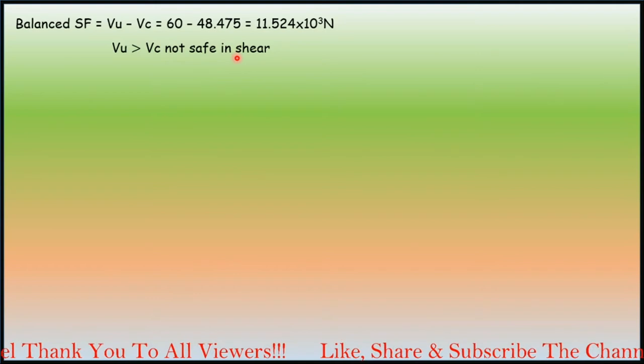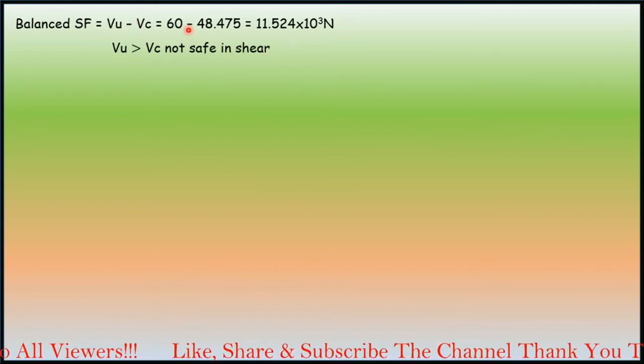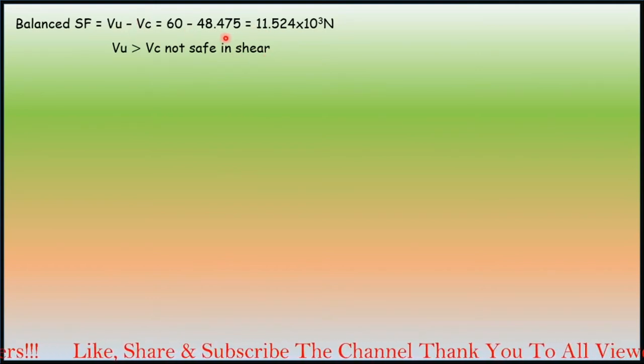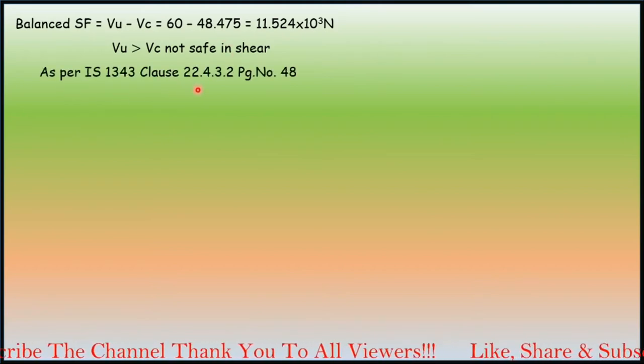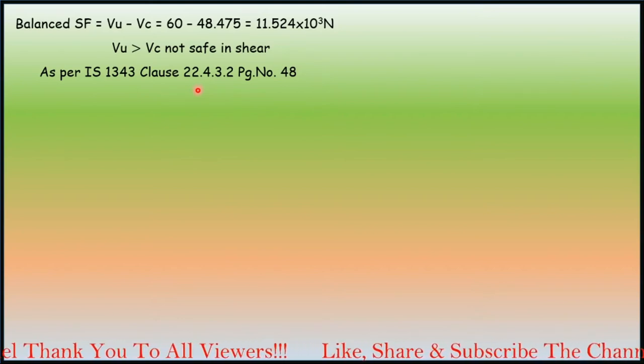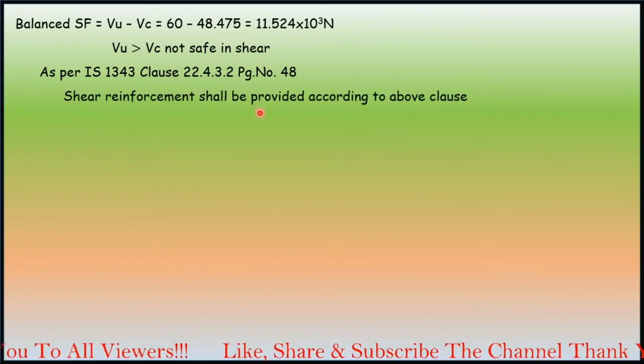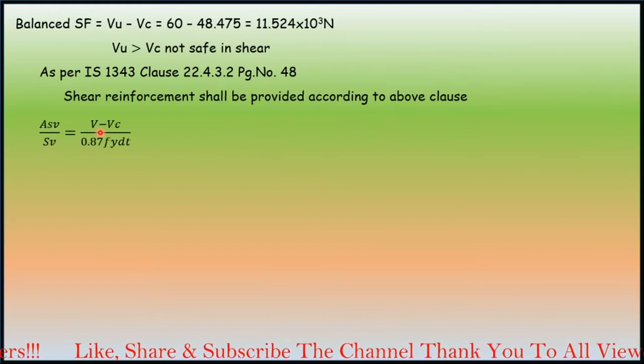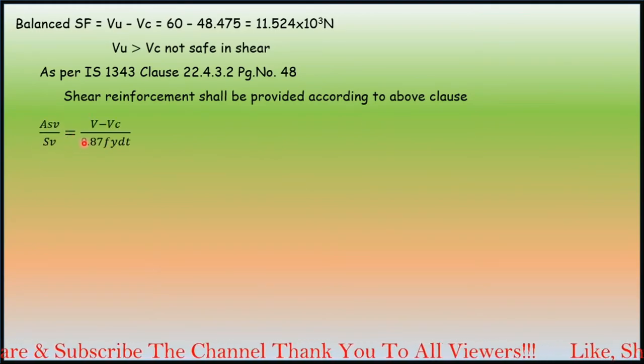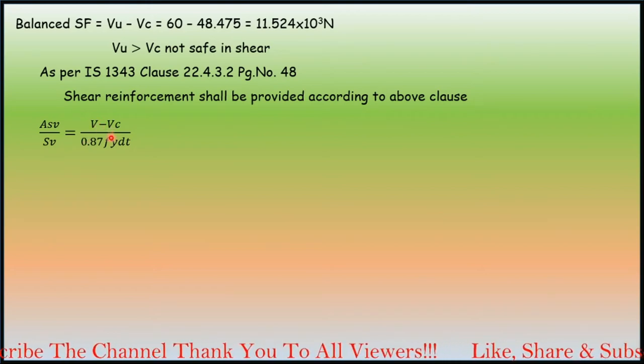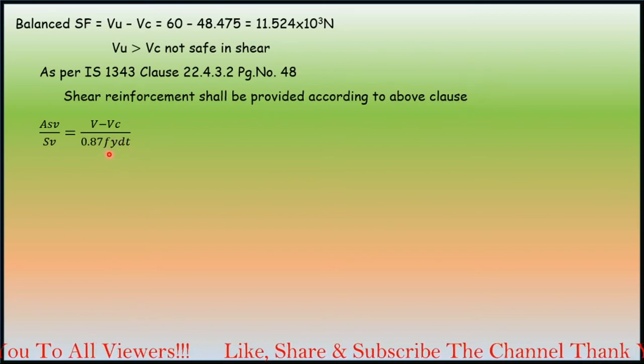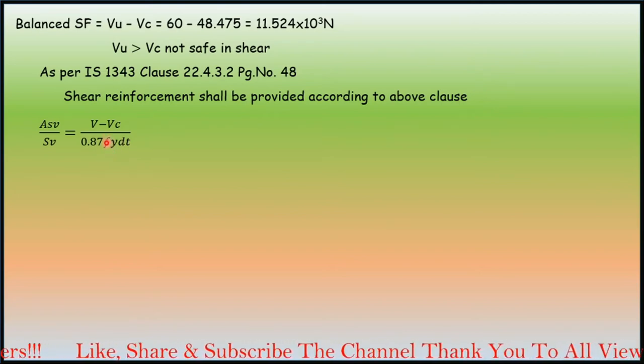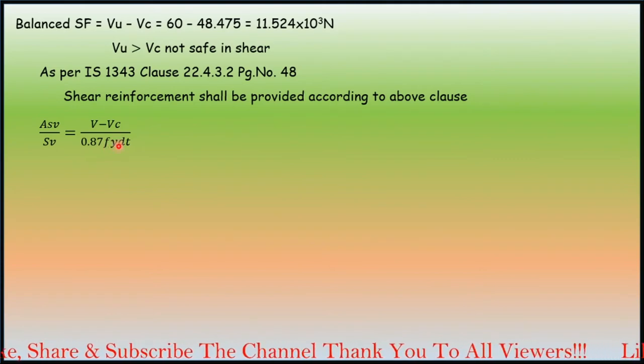Vu is greater than Vc, not safe in shear. As per IS 1343, clause number 22.4.3.2, page number 48, shear reinforcement shall be provided according to the above clause with this formula: Asv/Sv = (V - Vc)/(0.87 fy dt). Here fy is the stirrup characteristic strength of the steel, that is 250 N/mm² given in the question.